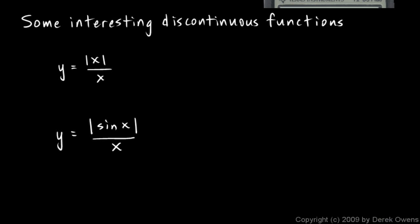If we just had y equals x over x, well, that would be the same as y equals 1. That would just be a graph that was at a y value of 1 the whole time. But that's not quite what we have.